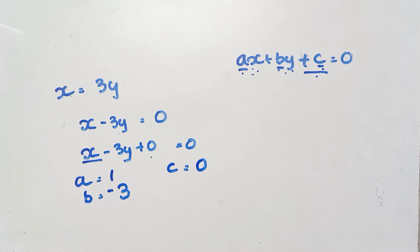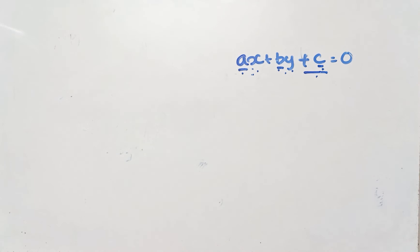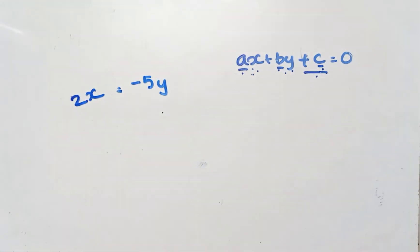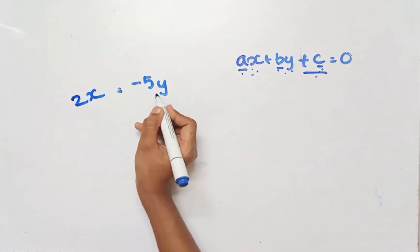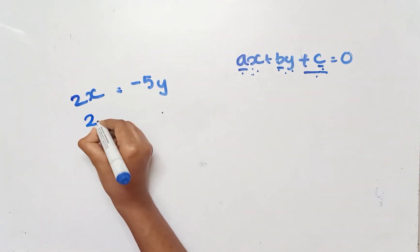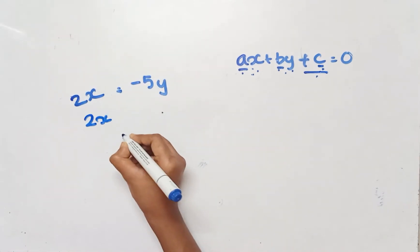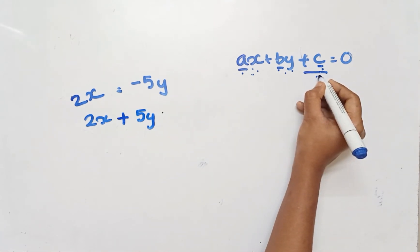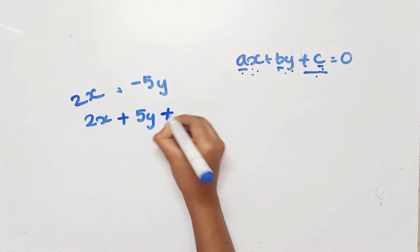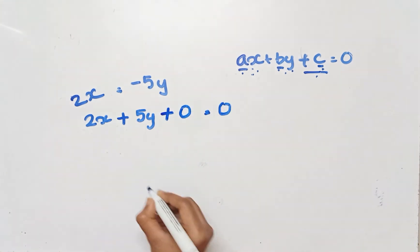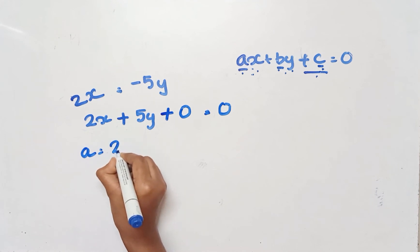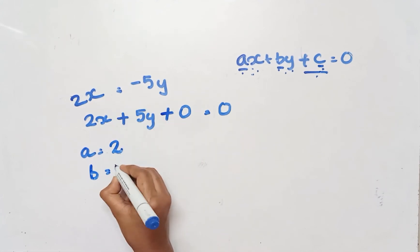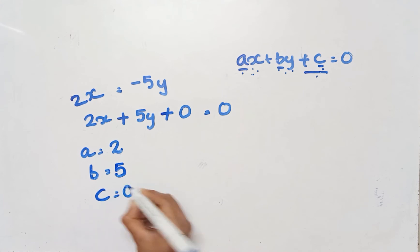Fifth sub-question: 2x equals negative 5. We rearrange to 2x plus 5 equals 0, written as 2x plus 0y plus 5 equals 0. So A equals 2, B equals 0, and C equals 5.